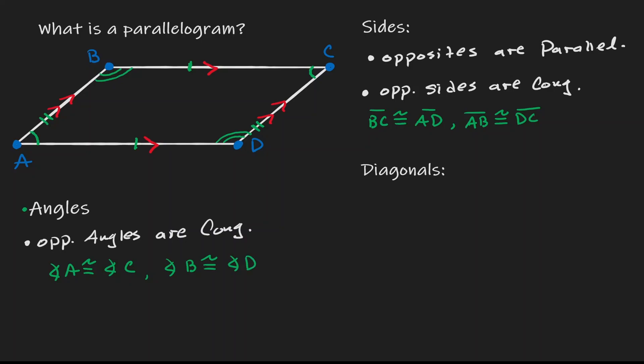Now, there's another property when it comes to angles, and that is that adjacent angles are supplementary. Some examples: angle A and angle D are on the same line — they are on the line AD — therefore they're adjacent, and therefore they are supplementary.